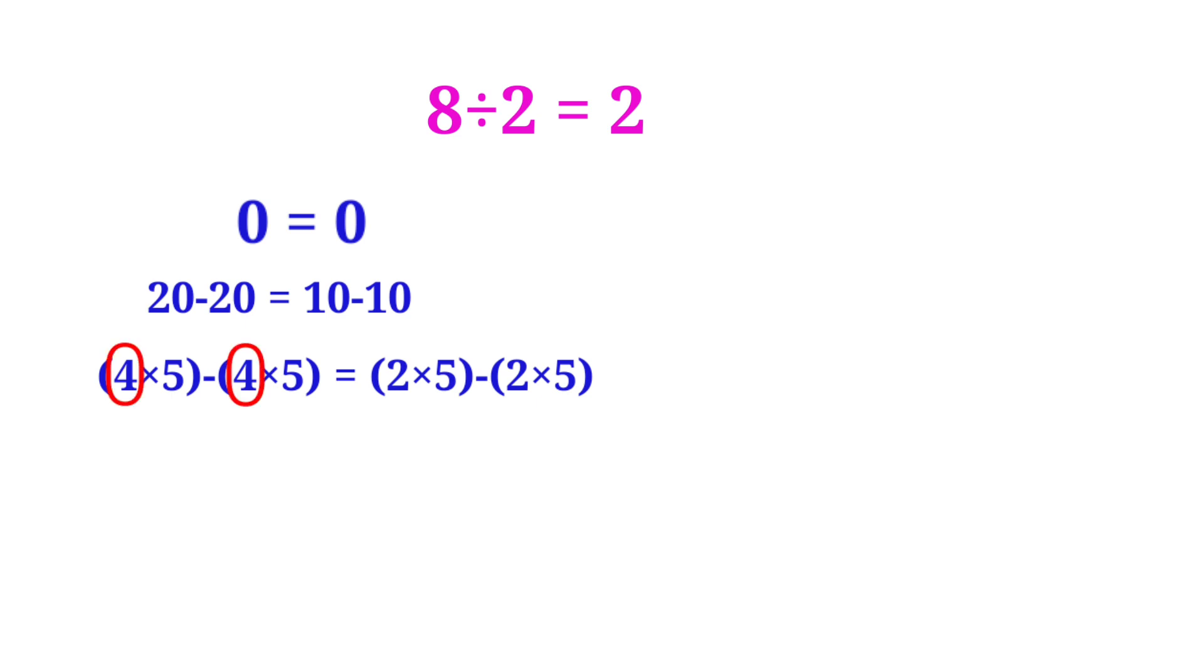So 4 times 5 minus 4 times 5 equals 2 times 5 minus 2 times 5. Now see here, in the left side 4 is common, and in the right side 2 is common. So now we can take the common terms.